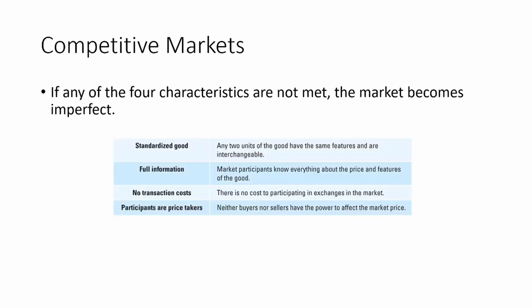Just a quick review of the four factors of a competitive market: you must have a standardized good, full information, no transaction costs, and participants must be price takers. If any of these four characteristics are not met, then your market becomes imperfect and you no longer have a competitive market.